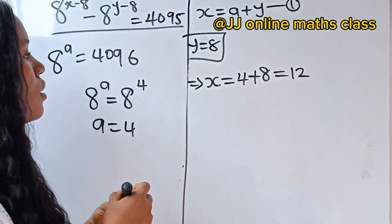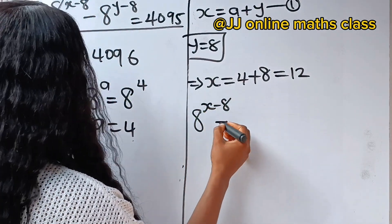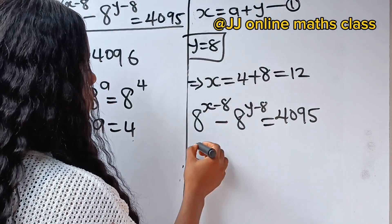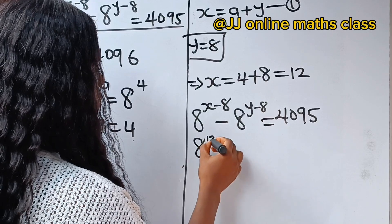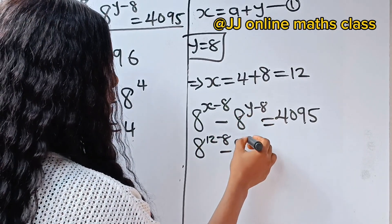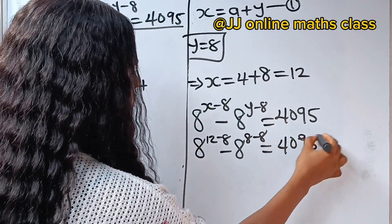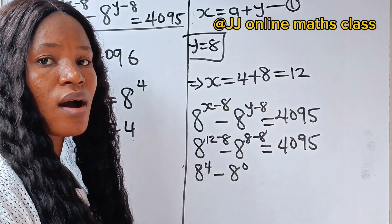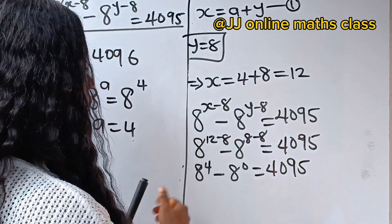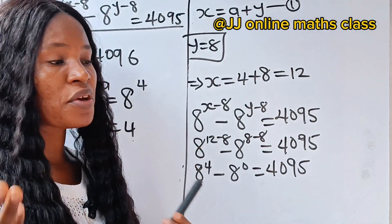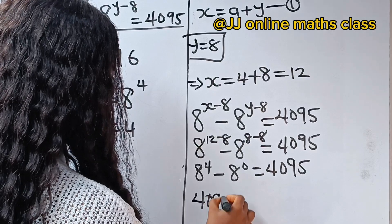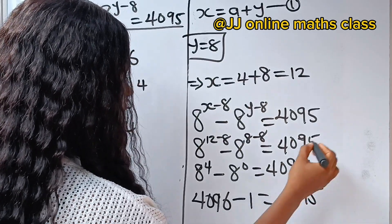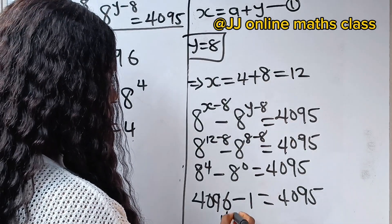Now let's prove our solution. The equation says 8 raised to the power of x minus 8, minus 8 raised to the power of y minus 8, is equal to 4,095. Substituting: x is 12, so 12 minus 8 is 4; y is 8, so 8 minus 8 is 0. This gives us 8 to the power of 4 minus 8 to the power of 0 equal to 4,095. Now, 8 to the power of 4 is 64 squared, which is 4,096, and 8 to the power of 0 is 1. So 4,096 minus 1 is 4,095. The left-hand side equals the right-hand side, proving our solution is correct.